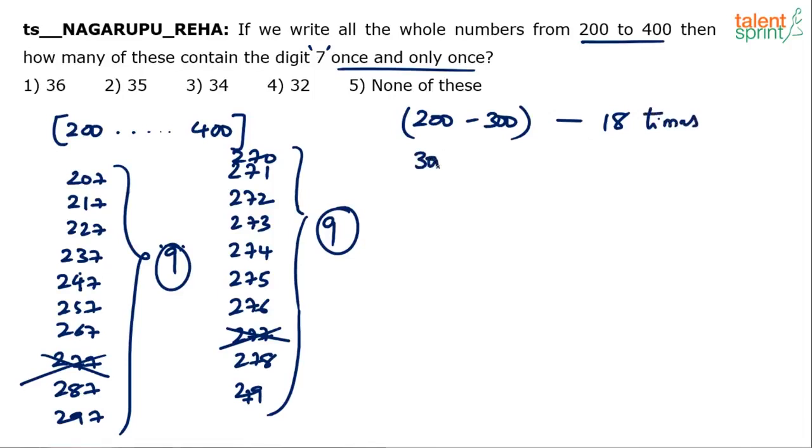So, obviously, from 300 to 400 also, it is going to happen the same 18 times. There won't be any change. From 400 to 500 also, it will happen 18 times only. There is not going to be any difference. The difference comes only when we are in the range of 700 to 800. Because here, every number from 700 to 800 will have 7.